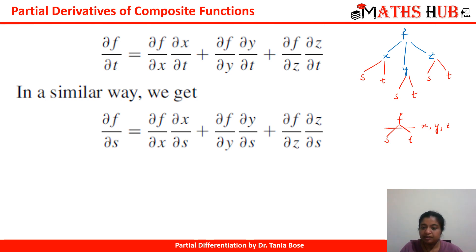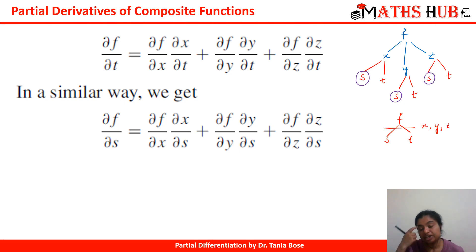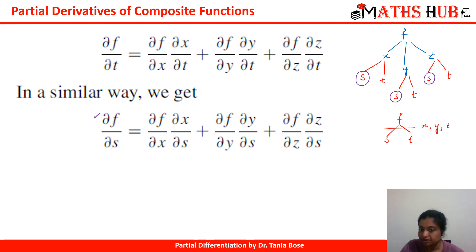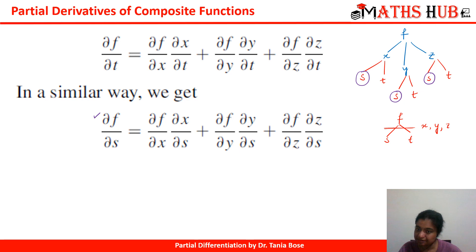When taking the derivative of f with respect to s, note how s is connected: through x, through y, and through z. Using successive chain rules: ∂f/∂s = (∂f/∂x)(∂x/∂s) + (∂f/∂y)(∂y/∂s) + (∂f/∂z)(∂z/∂s).